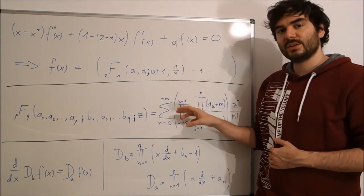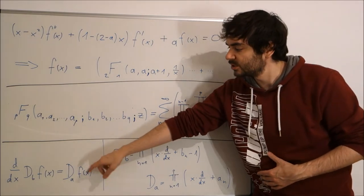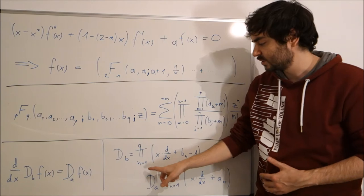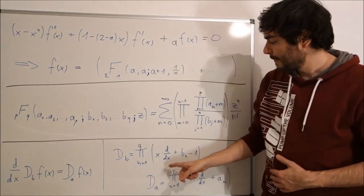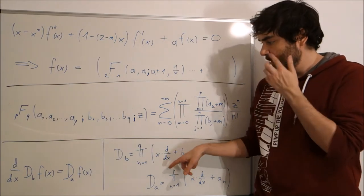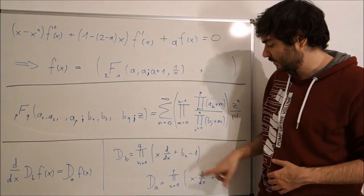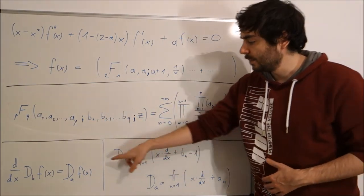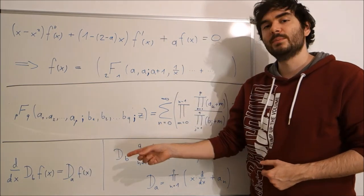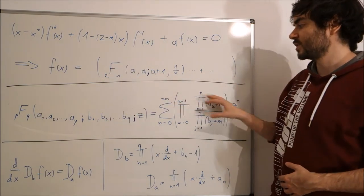This generalized hypergeometric function F_pq, where p and q are some integers, takes three arguments: the complex number z, and two arrays — one with q elements and one with p elements. This object pops up as a solution of many differential equations because there is a very general differential equation it satisfies. You have two differential operators on each side, and whenever you have a differential equation of this broad form, this expression turns out to be a solution.